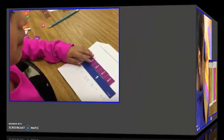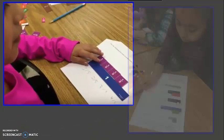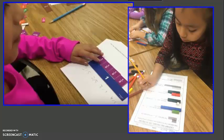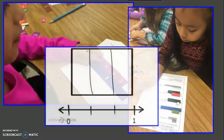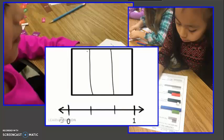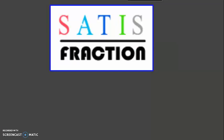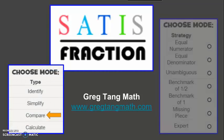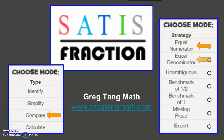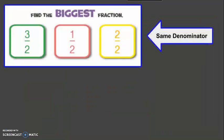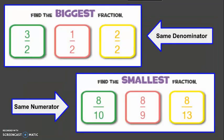As students explore comparing fractions with a variety of concrete models, they deepen their understanding of fractions as numbers. Once students grasp the size of each unit fraction, they can compare fractions without models. The Status fraction game by Greg Tang provides opportunities for students to compare fractions with equal numerators and denominators. Once selecting the activity, students can strive to compare the biggest and smallest fractions in the least amount of time without making any errors.